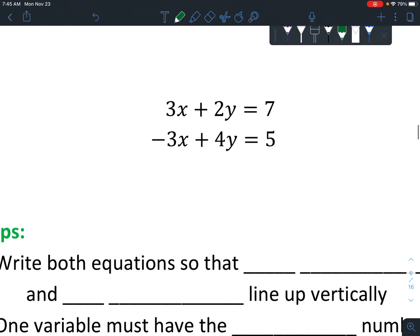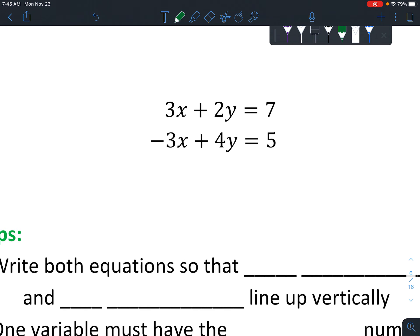When you have systems of equations that are in standard form, this is often the way that's easiest to use. Standard form means you've got your x, and you've got your y, and it generally equals a number.